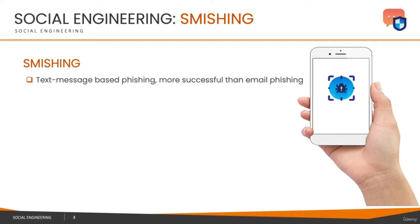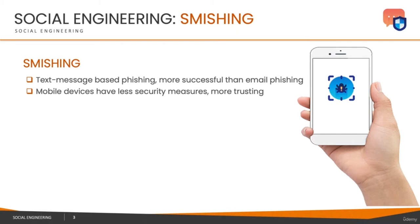Smishing is much more successful than its traditional counterpart, phishing through emails. The reason is that people give more importance and credibility to text messages than emails. We've been receiving spam and scam emails for a long time, so most of us are familiar with those scams. But when we receive a message on our mobile phones it doesn't click immediately because it's something relatively new. Moreover, mobile devices generally have less security measures compared to laptops or desktops with anti-malware, anti-viruses, and firewalls.